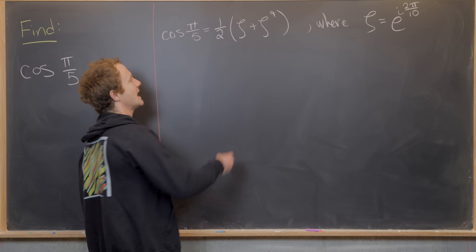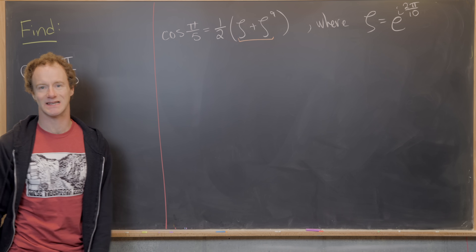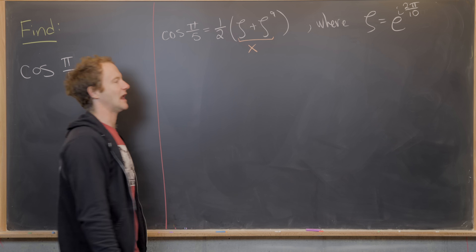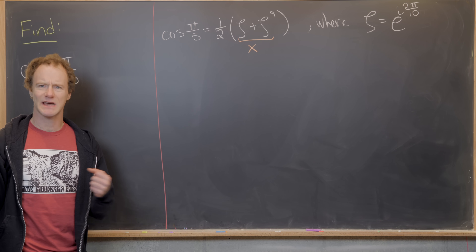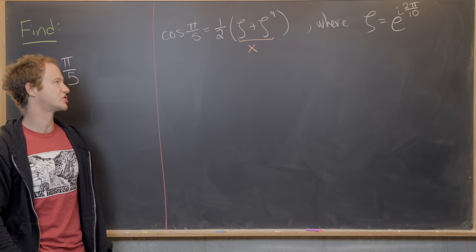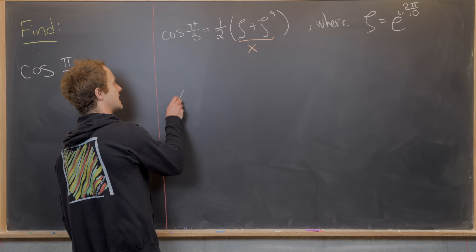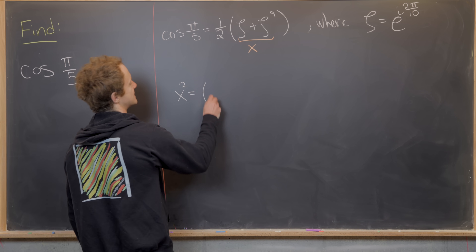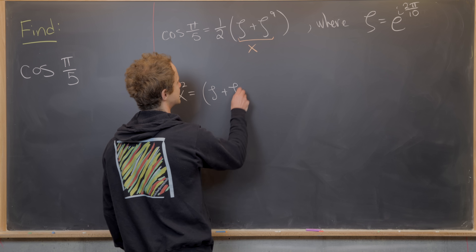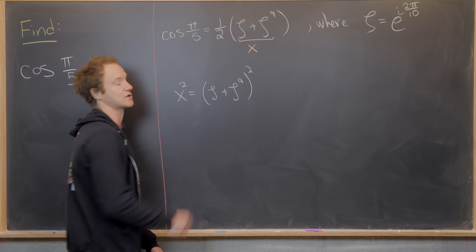On the last board, we saw cosine of π/5 was ½(ζ + ζ⁹) where ζ is the primitive 10th root of unity e^(i2π/10). Now we let x = ζ + ζ⁹ and examine the nice behavior that x has with regard to its square. So let's compute x²: that's (ζ + ζ⁹)².